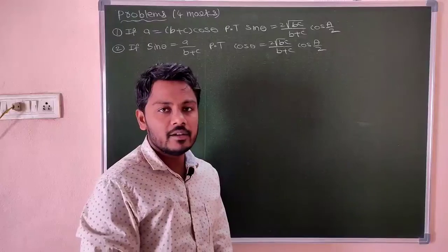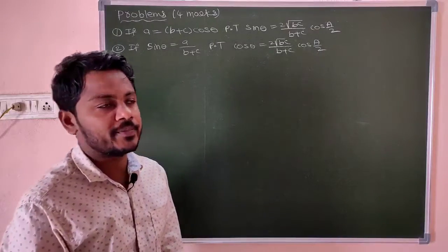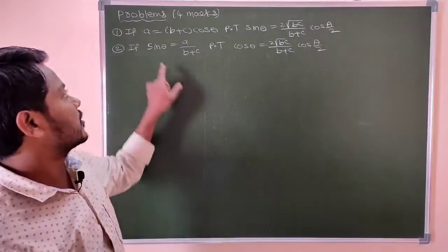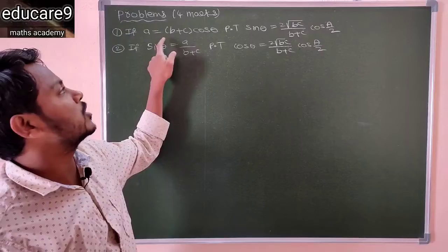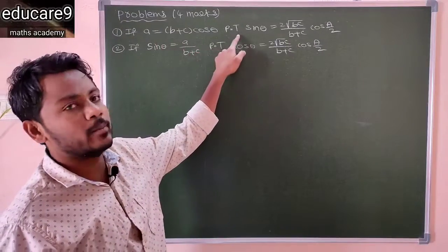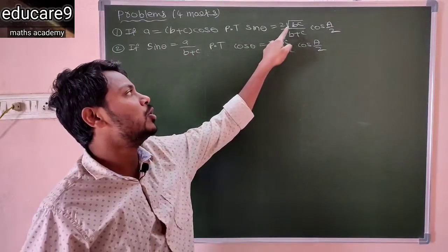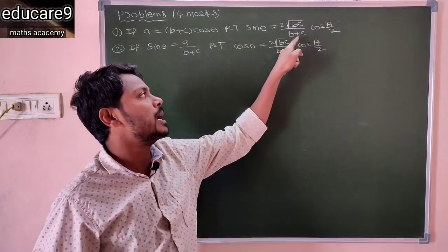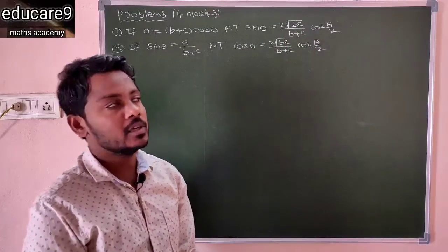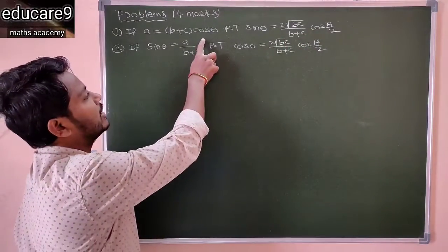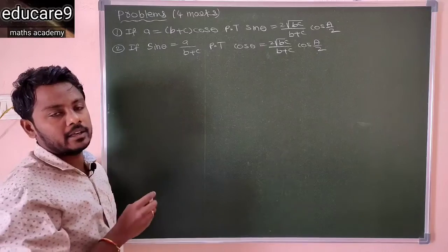Hi everyone. For this session we will discuss a few problems. See the first problem: if a equals b plus c cos θ, then prove that sin θ equals 2√(bc)/(b+c) times cos(A/2). So here cos θ is given, and you need to find sin θ.